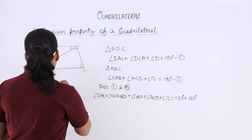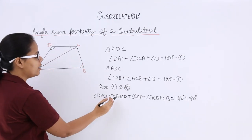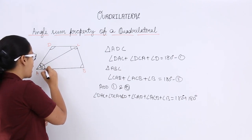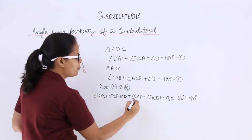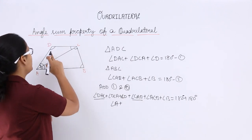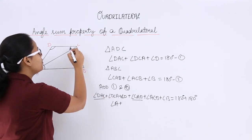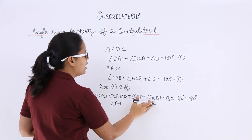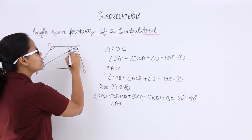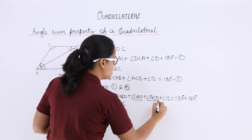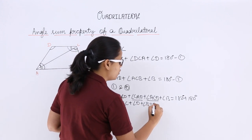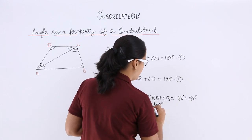Now, angle DAC and angle CAB — on summing these two parts — you will get the whole angle A. Similarly, angle DCA and angle ACB — when you add both of these — you will get the whole angle C. So the remaining terms are angle D plus angle B, giving us angle A plus angle C plus angle D plus angle B.